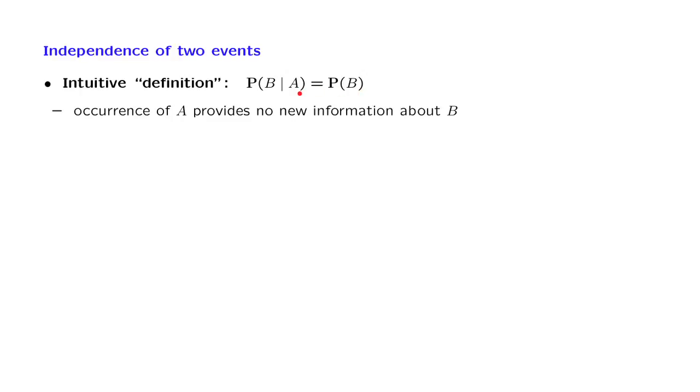Thus, the occurrence of A provides no new information about B. In such a case, we may say that event B is independent from event A.